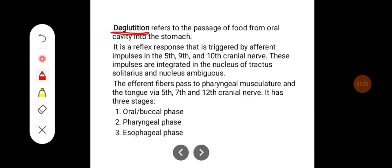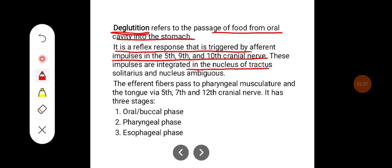Coming to deglutition, it refers to the passage of food from oral cavity into stomach. It is a reflex response that is triggered by afferent impulses in the 5th, 9th and 10th cranial nerves. These impulses are integrated in the nucleus tractus solitarius and nucleus ambiguus. The efferent fibers pass to pharyngeal musculature and the tongue via the 5th, 7th and 12th cranial nerves.